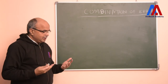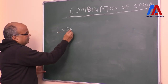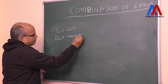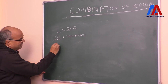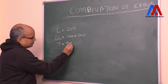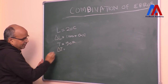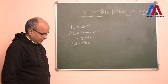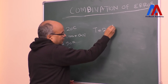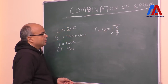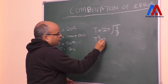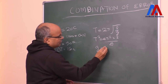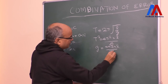So let us see what values are given. Length L is 20 cm. The error in length, delta L, is 1 mm or 0.1 cm. Similarly, the time given is T equal to 90 seconds, and the error in time, delta T, is 1 second. Now we solve the problem. The given formula is T equal to 2π under root L upon G. Squaring both sides: T² equals 4π²L upon G. Therefore G equals 4π²L upon T².